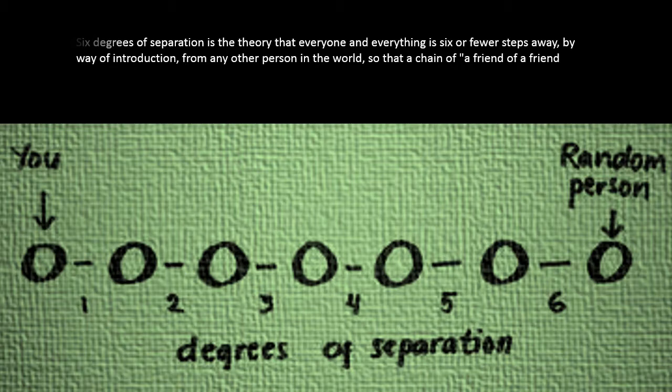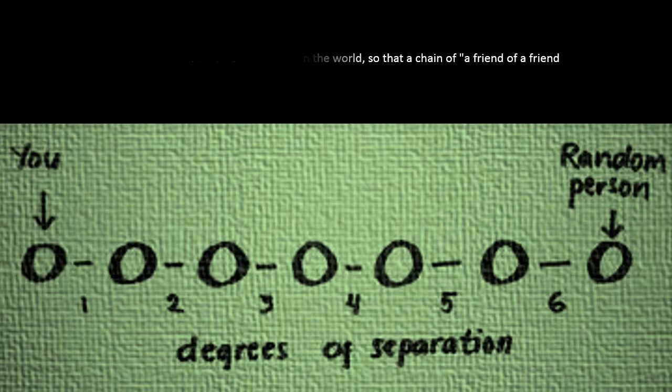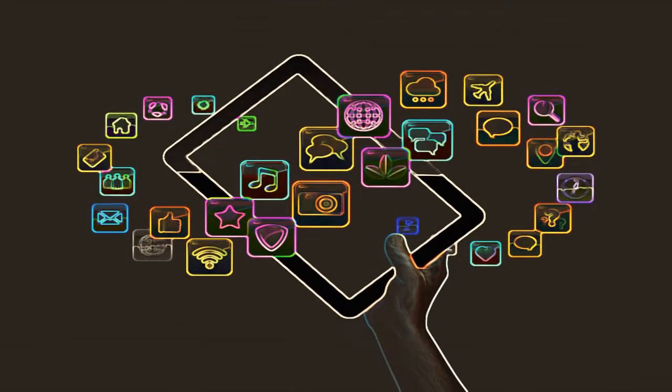What he found was a power law distribution of links where the great majority of pages had very few links, but some, he called these hubs, had many. Barabási basically described this structure as a scale-free network because it maintains this property whatever scale you look at it.